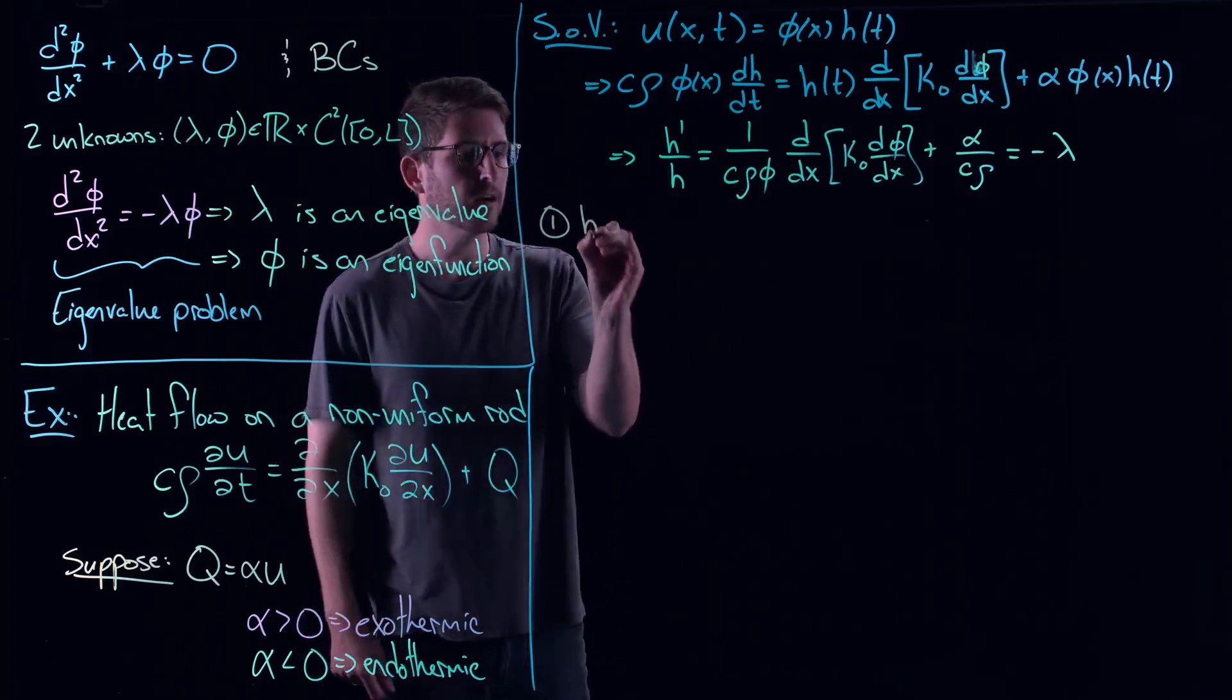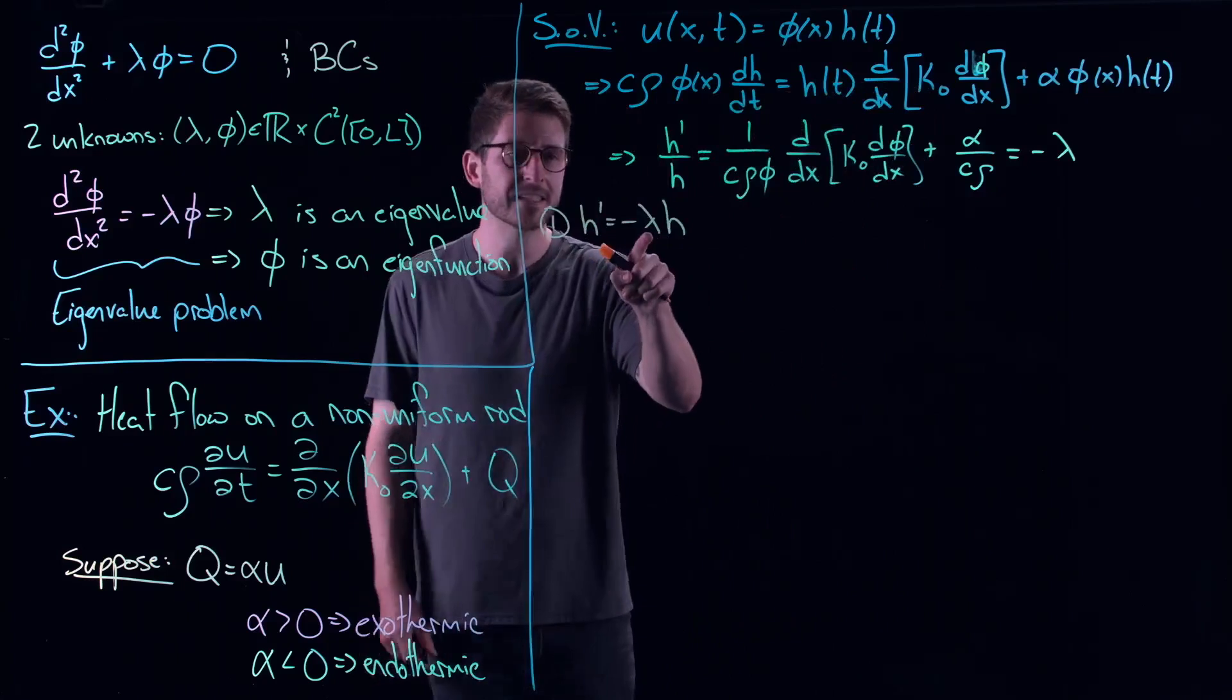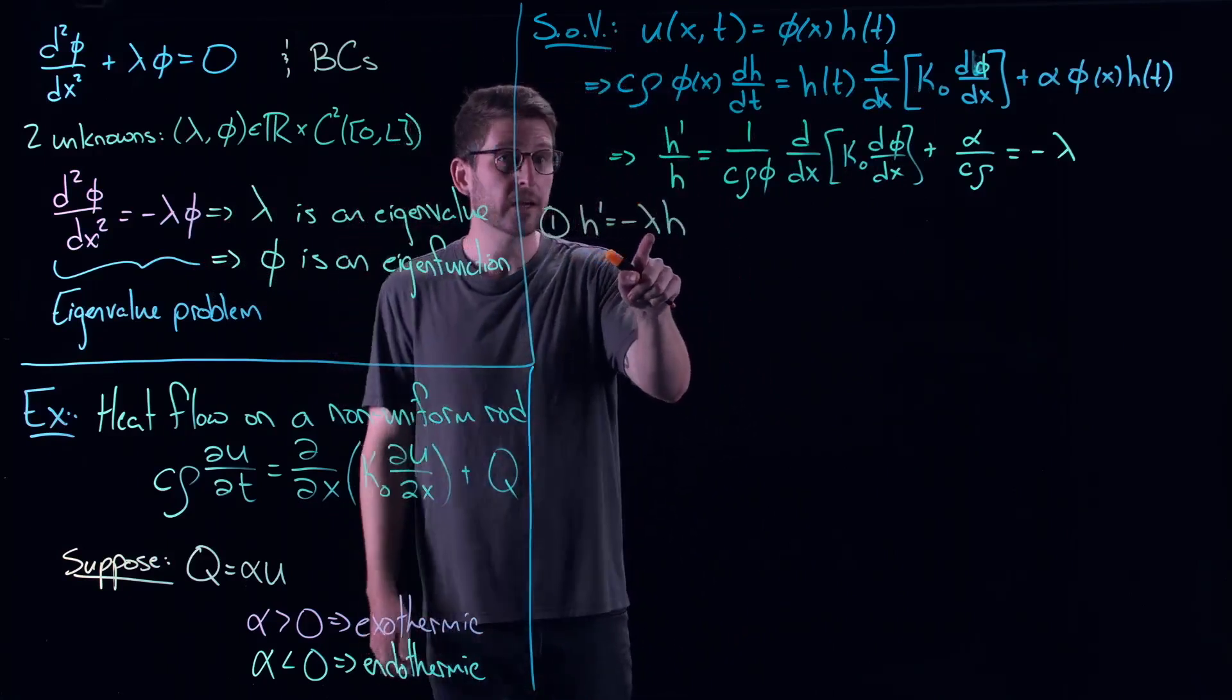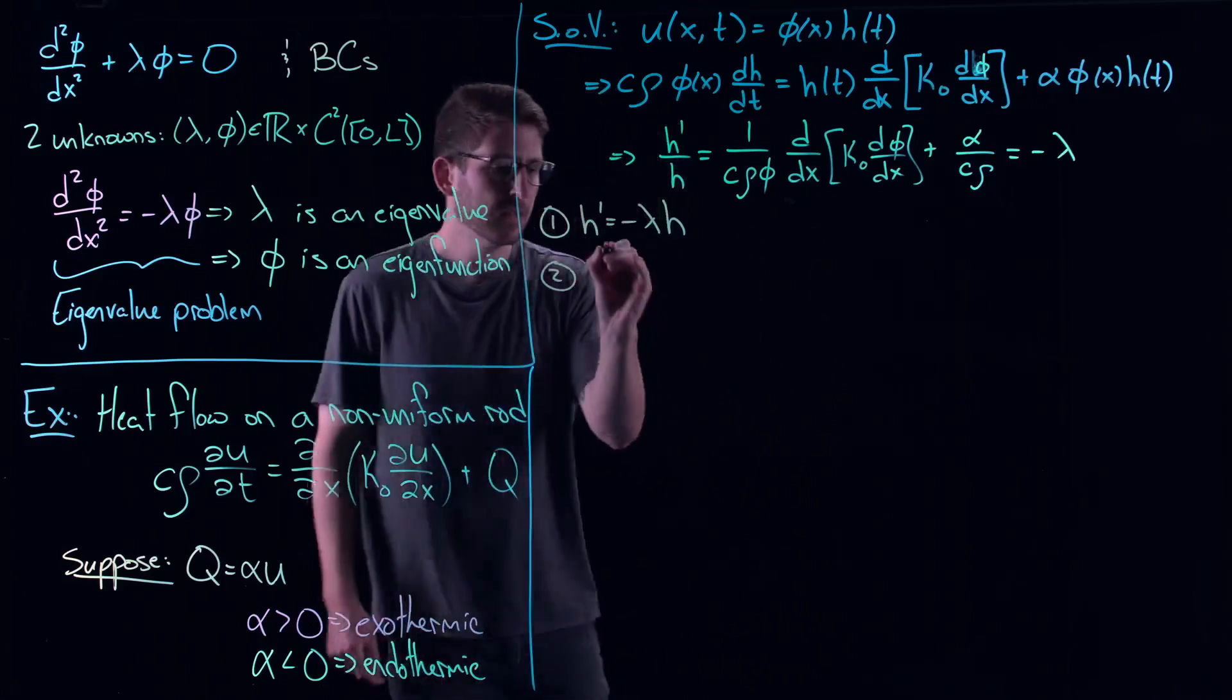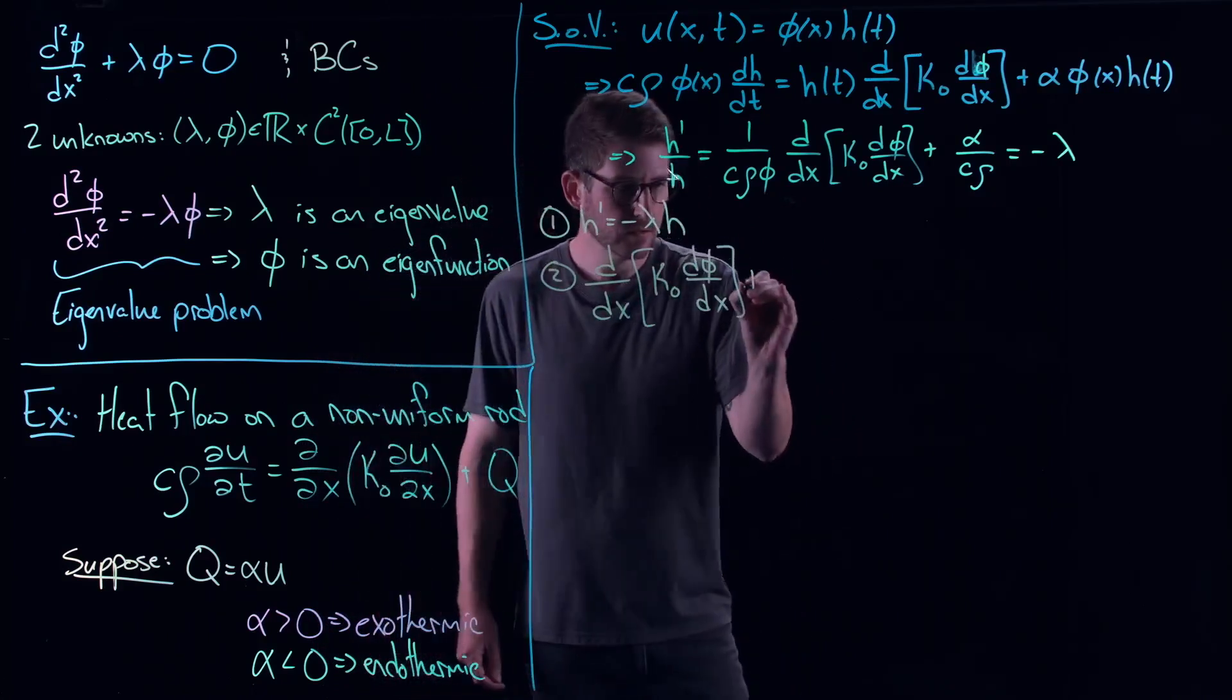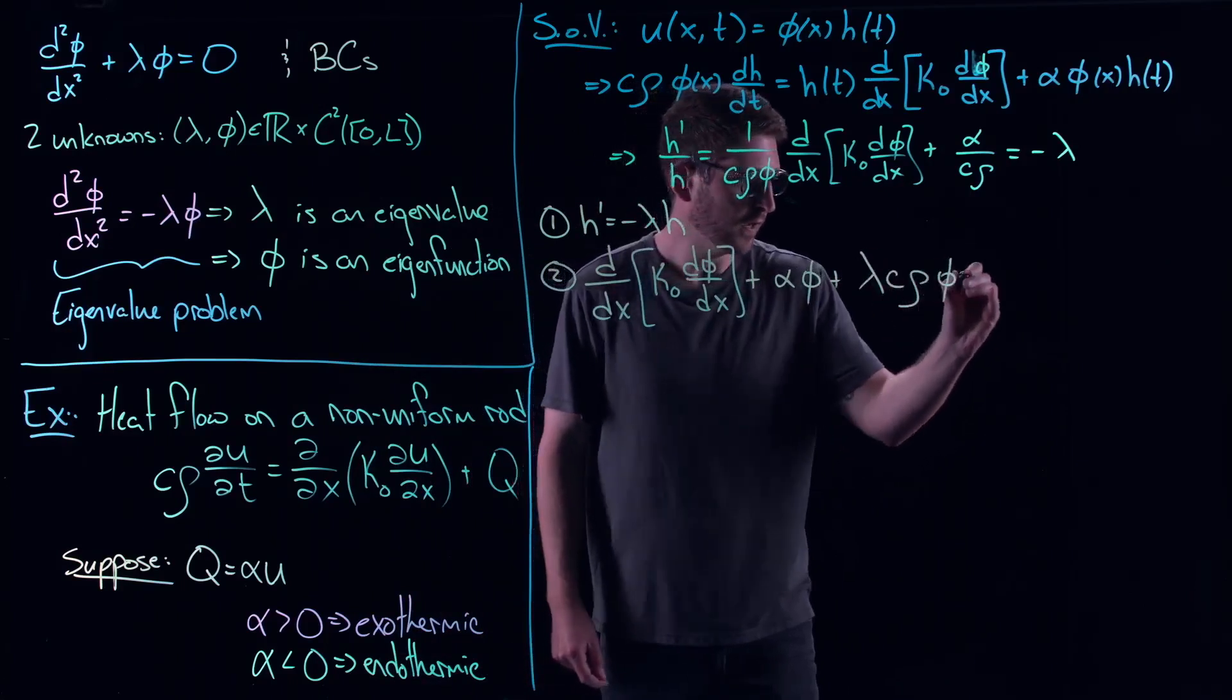So the first equation we get is our usual time equation: H' = -λH. We can solve that very easily - all the solutions are exponential. The most important and critical piece is this eigenvalue lambda. If it is positive, heat will decay. If it is negative, heat will blow up. So really, the eigenvalues play a critical role in the time dynamics here. But those eigenvalues come from the spatial part of the system. They come from this piece right here: d/dx(k₀·dφ/dx) + α·φ + λ·C·ρ·φ = 0.